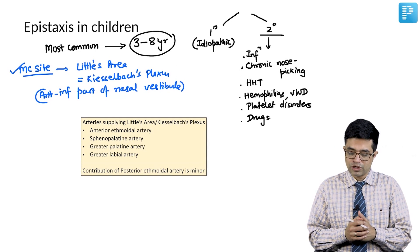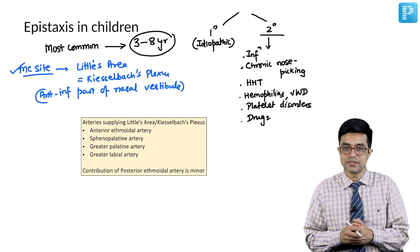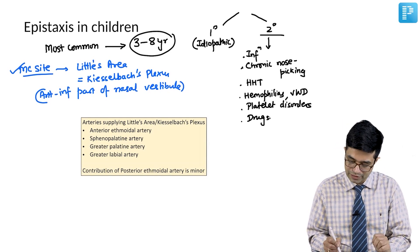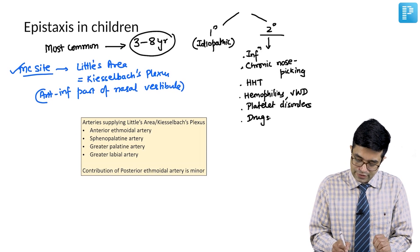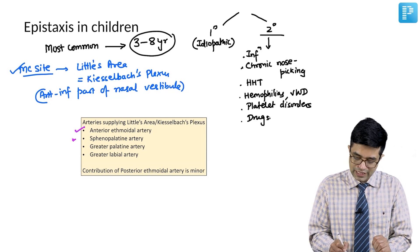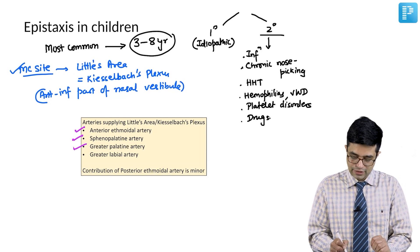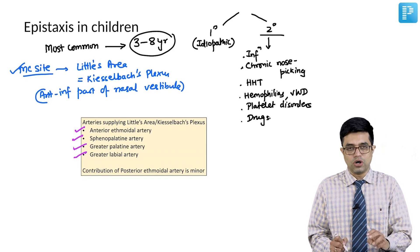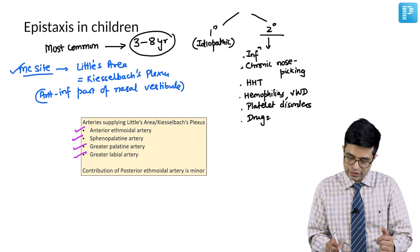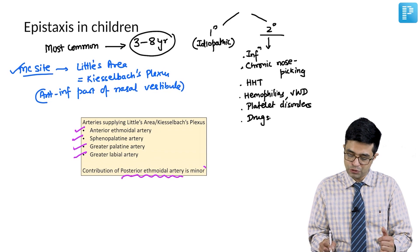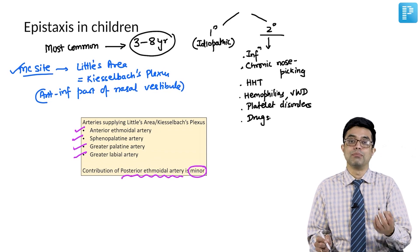Potential MCQ here: what are the arteries supplying this Little's area? There are four arteries you need to remember. There is anterior ethmoidal artery, sphenopalatine artery, greater palatine artery, and greater labial artery, although photographs may show you posterior ethmoidal artery also, but its contribution in children with epistaxis is minor.